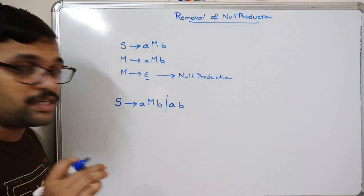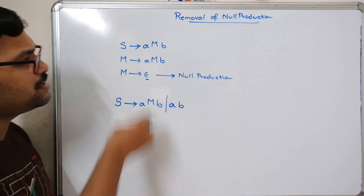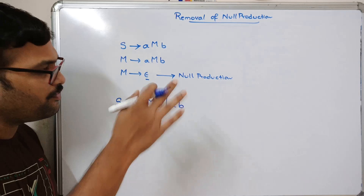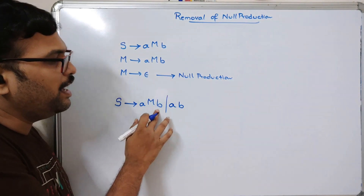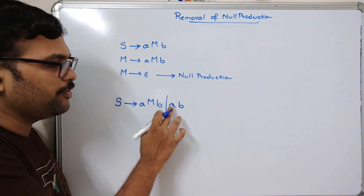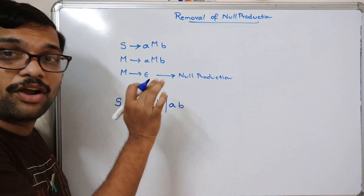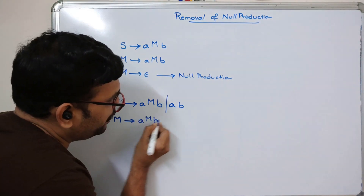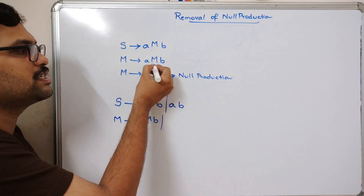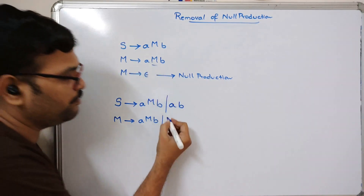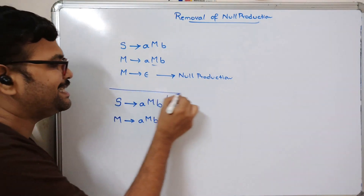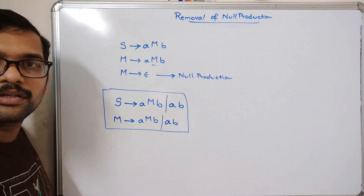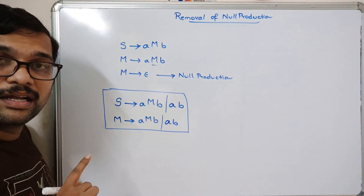Don't remove any production — just write down all the productions, and after that add the new productions after applying epsilon. So aMb is already there, and after applying epsilon on M we write all the possibilities. Similarly, M → aMb also contains M, so apply epsilon in the place of M and we get ab again. This is the production rule after eliminating the null production.